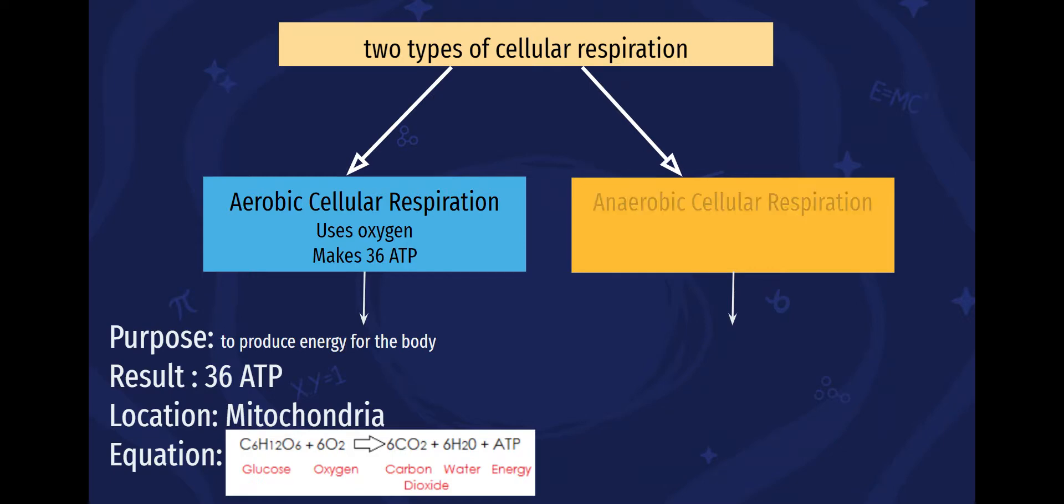The other side to the story is anaerobic cellular respiration. Now, anaerobic means no oxygen present. So ana, meaning lack thereof. So no oxygen used. This only makes us two ATP overall. So if you compare the two, aerobic cellular respiration makes us a lot of energy, where anaerobic cellular respiration makes us very little.